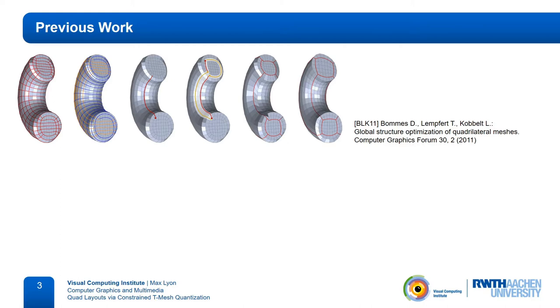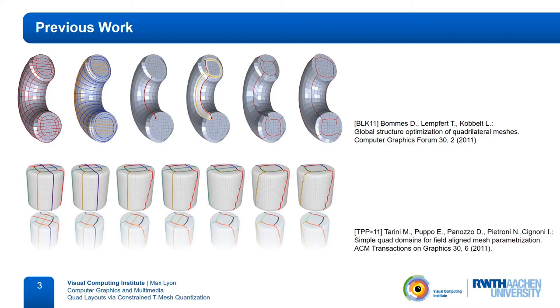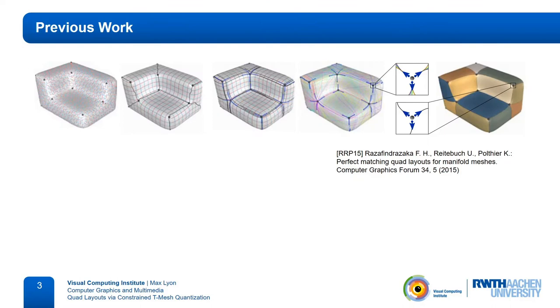Some earlier works take as input a quad mesh and iteratively adjust the layout structure. One example is the work of Bombers and colleagues, who adjust some edge flows to remove certain helical connectivity patterns. Another one is the work of Tarini and colleagues, who work directly on the layout and iteratively reconnect layout edges directly. Unfortunately, such iterative methods that apply modifications in a greedy fashion may get stuck in local minima, which prevent further layout simplification.